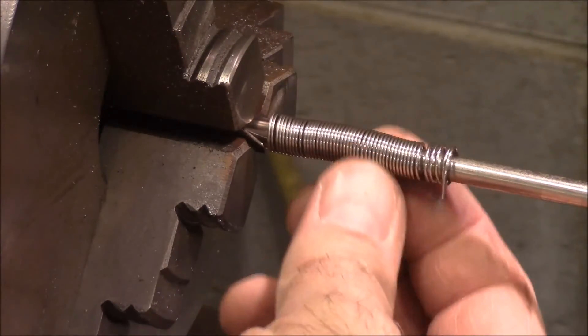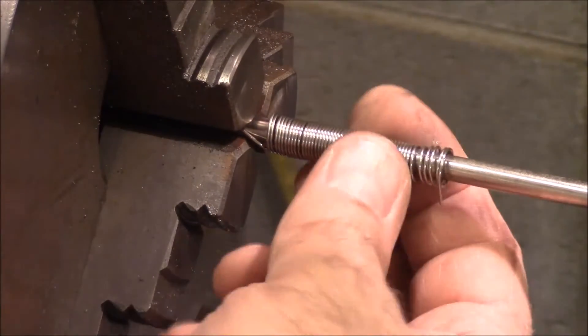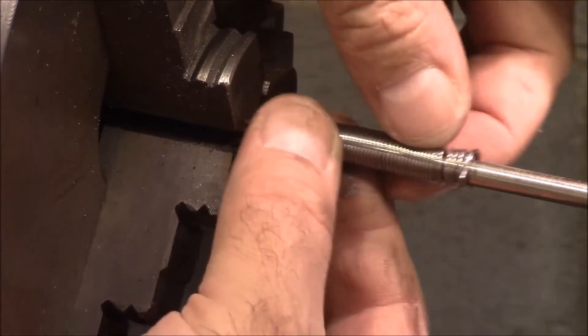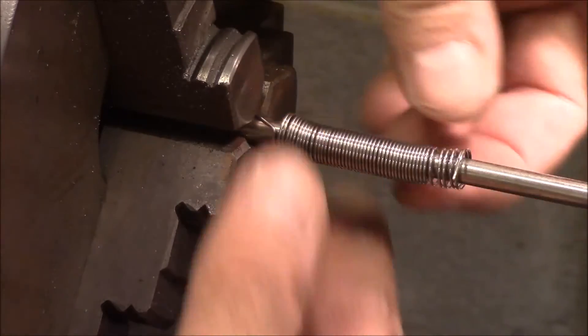All right, so you can see there at the end it jumps back a little bit. So you want a mandrel that's smaller than the size of the spring that you want. But you can see we formed a spring.